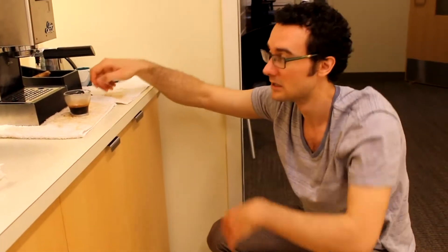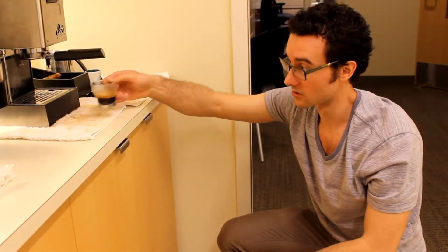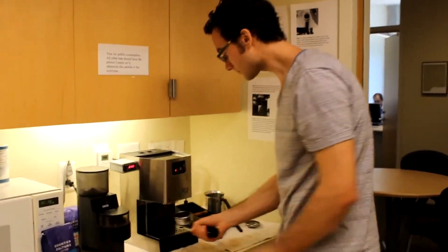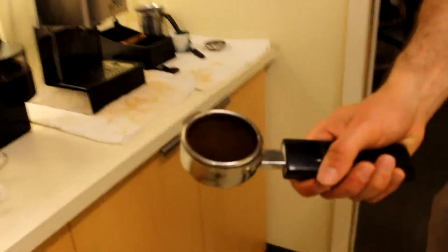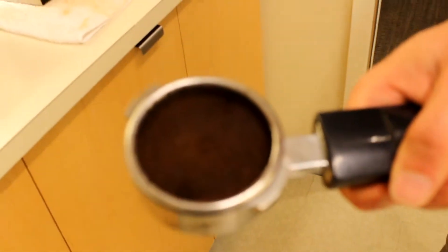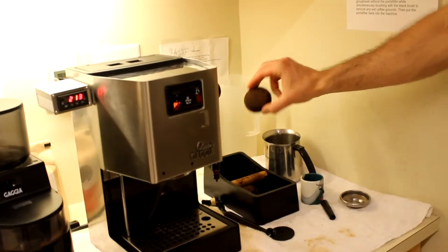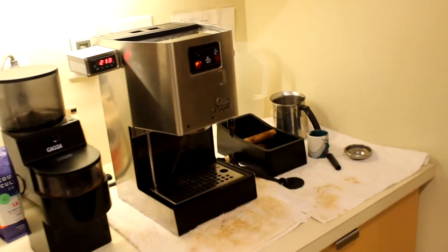The important part is to clean the machine so you can make espresso in the future. This is what a puck should look like—it should be very dry, not wet. You knock it in this knock box. Take a look, it's very solid. You've extracted a lot of the coffee from that.